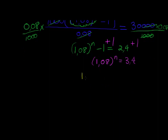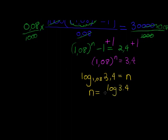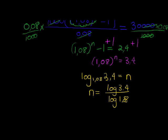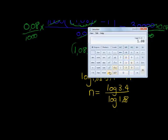Use our logs. So log of 1 comma 0 8, that's the base, gives me an answer of 3 comma 4, is equal to n. So what would n be equal to? Well, n would be equal to log of 3 comma 4 divided by log of 1 comma 0 8. Which gives me an answer of 3.4 log divided by 1.08 log, and that gives the answer of 15.9.